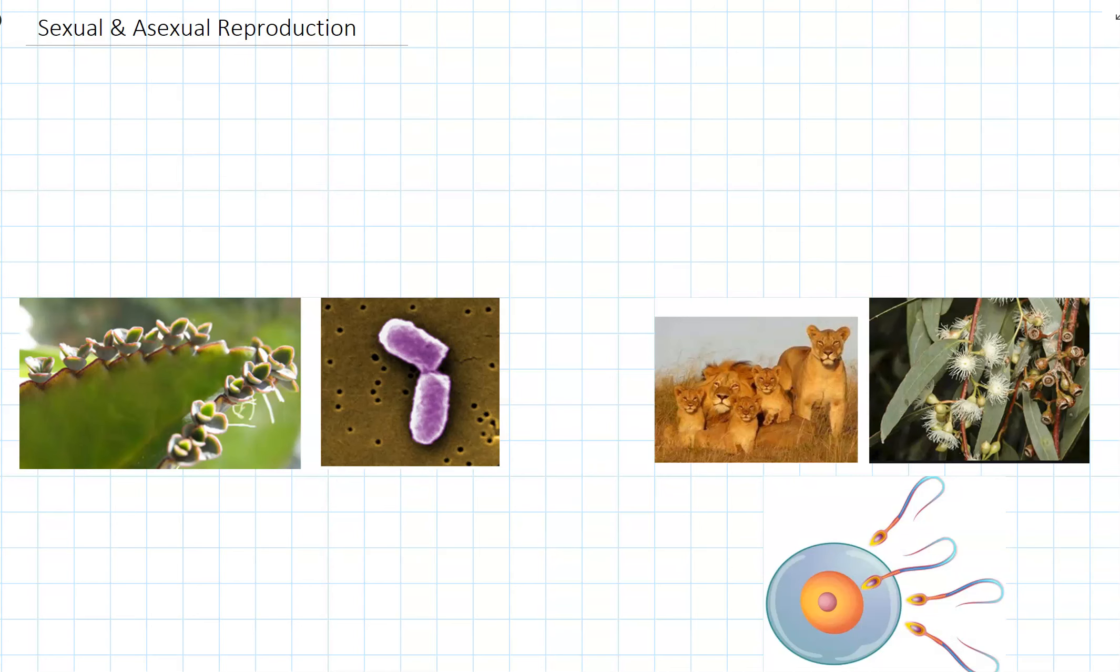Hey everybody! In this video we're looking at the two different ways that species can reproduce. This is really important because every different species has to reproduce, otherwise the species will go extinct.